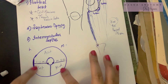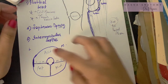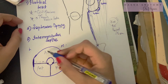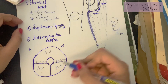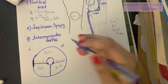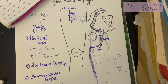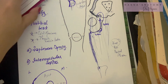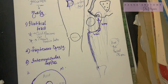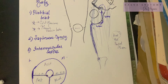These intermuscular septa are modifications of the deep fascia running inward to divide the thigh into three compartments, each with different muscles and vessels to be discussed in the next lecture. In summary, there are three main modifications of the fascia lata — the iliotibial tract, the saphenous opening, and the intermuscular septa — with the cribriform fascia as a possible fourth. Thank you for watching.